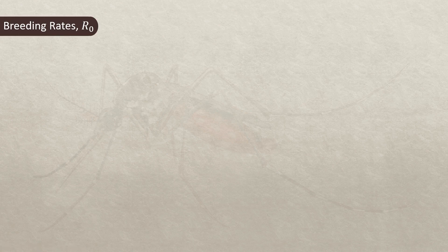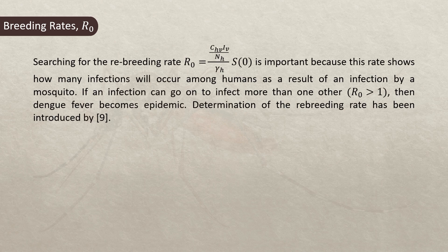Now we find the rebreeding rate, or basic reproductive number R-naught, which equals (C sub hv times I sub v divided by N sub h) divided by (gamma sub h times S sub 0). In this fraction, the numerator represents the infection rate and the denominator represents the human recovery rate. R-naught is important because it shows how many infections will occur among humans as a result of an infection by a mosquito. If R-naught is greater than one, then dengue fever becomes epidemic.